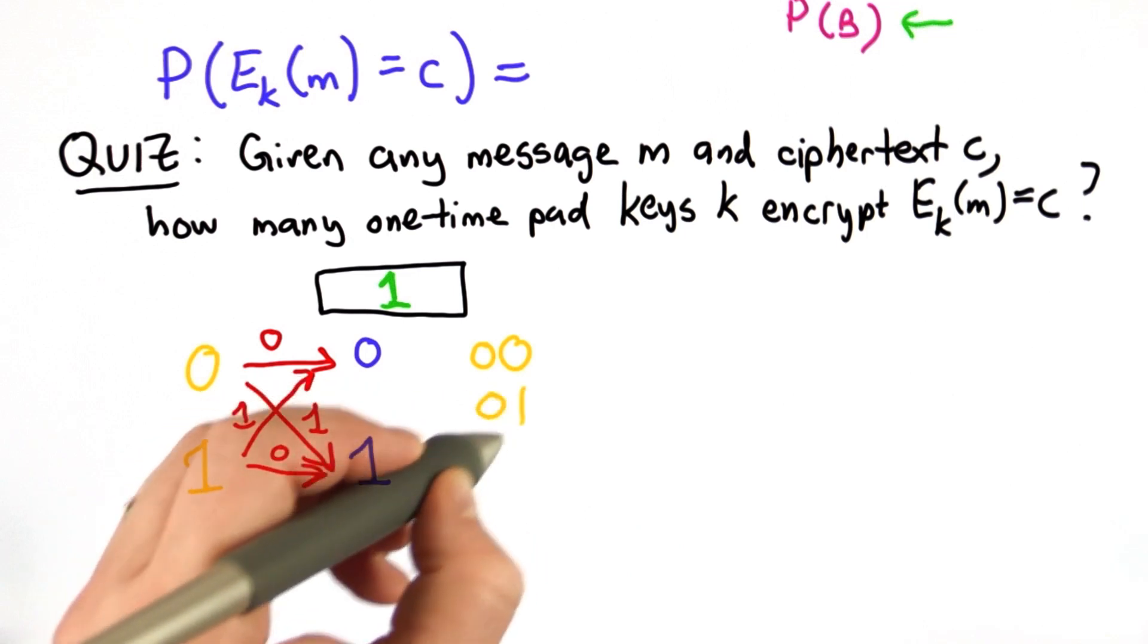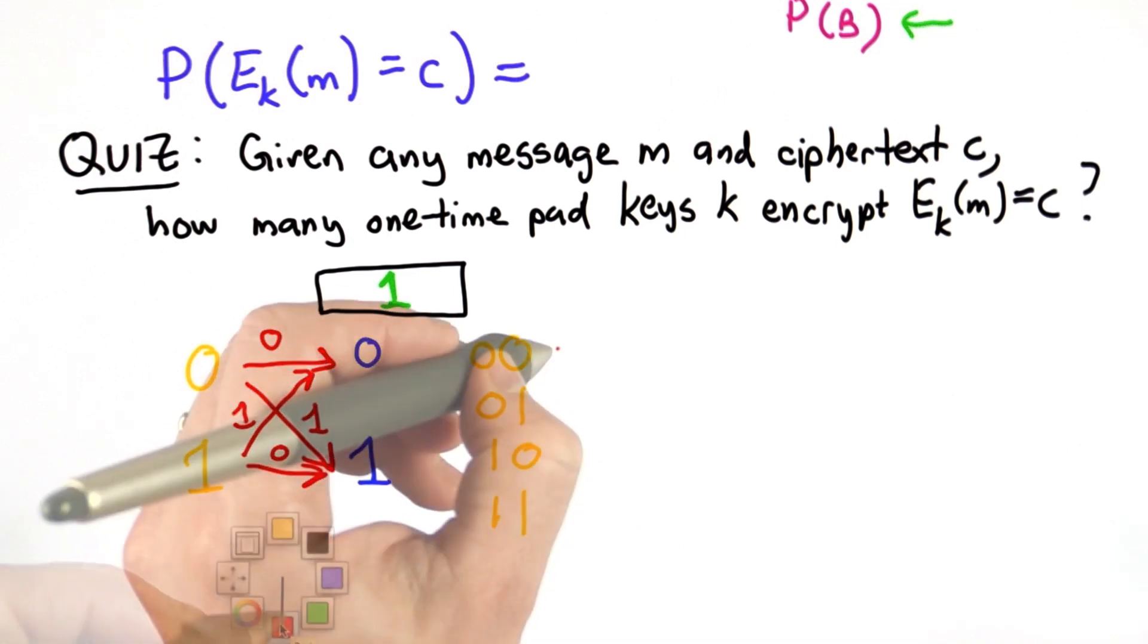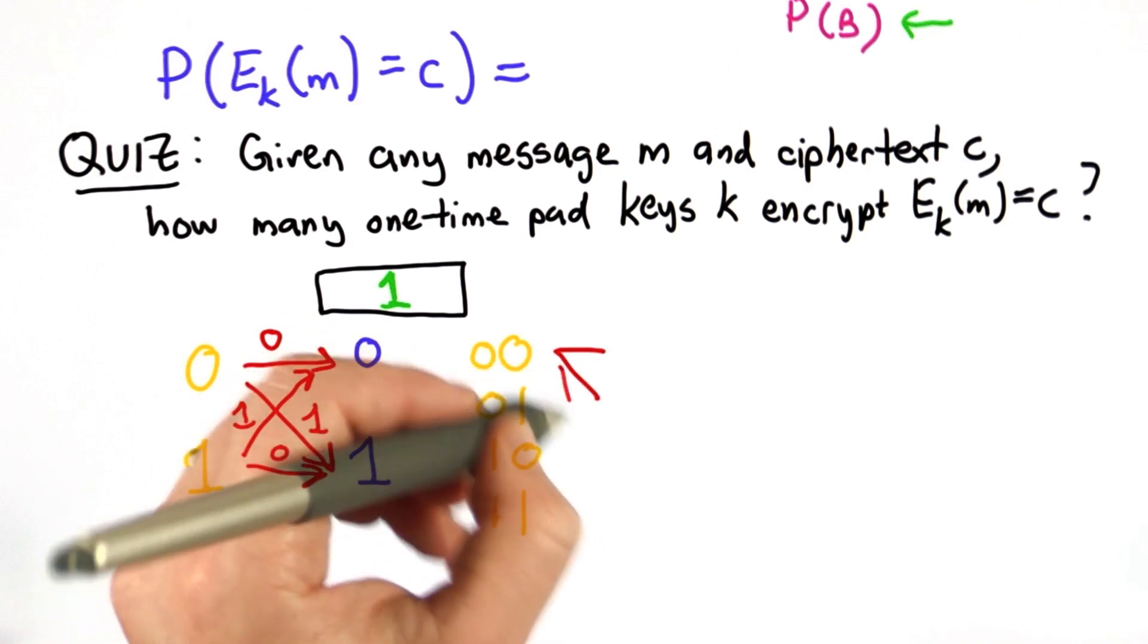So if we had 2-bit messages, there would be 4 different keys that would map each message to each different ciphertext.